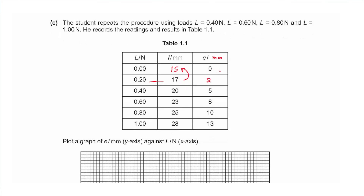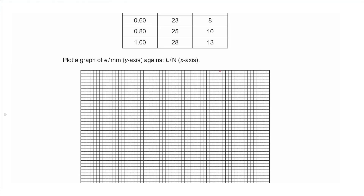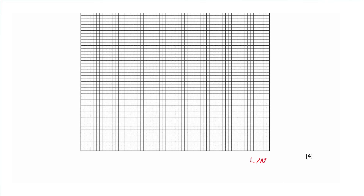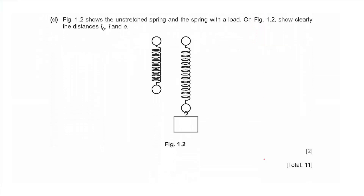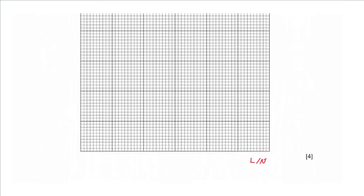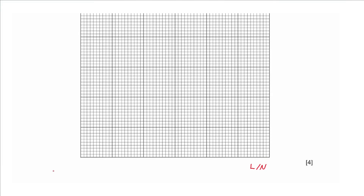Part c says the student repeats the procedure with loads 0.40, 0.60, 0.80, and 1.0 N. We are required to plot a graph of e per millimeter on the y-axis and L per newton on the x-axis. Since one reading for extension and load was already zero, we start from the origin (0, 0). The x-axis scale goes 0.2, 0.4, 0.6, 0.8, 1.0.